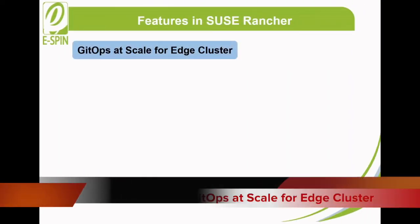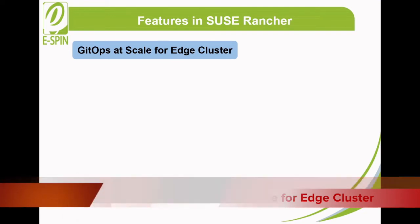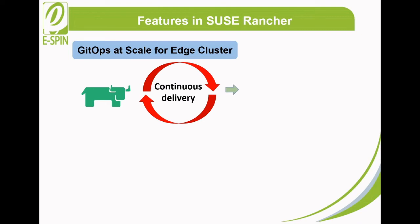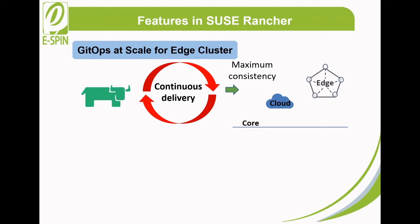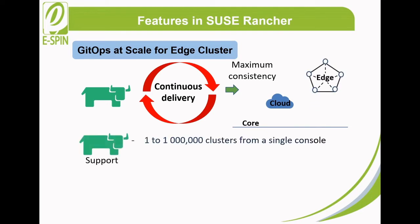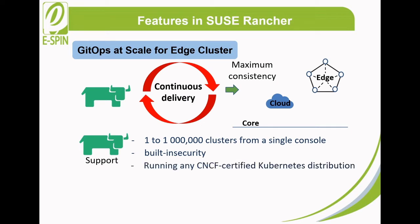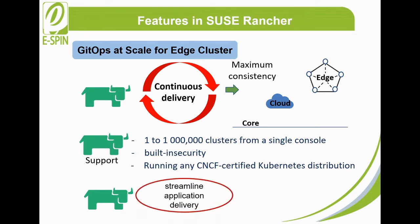GitOps at scale for each cluster. SUSE Rancher continuous delivery makes it possible for maximum consistency from core to cloud to edge. SUSE Rancher supports from 1 to 1 million clusters from a single console, with built-in security capabilities as well as support for running any CNCF certified Kubernetes distribution. By using SUSE Rancher, enterprises are able to streamline application delivery across any infrastructure in any location to accelerate their transition journey towards digital transformation.